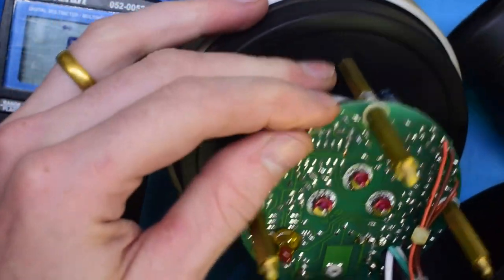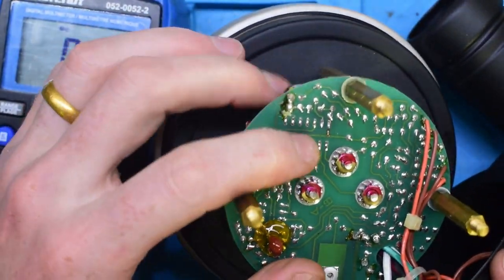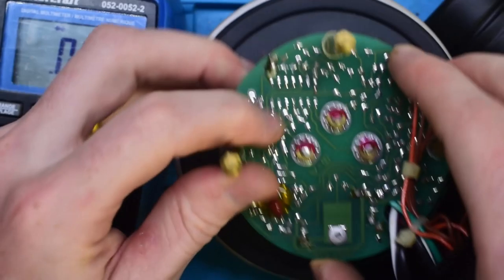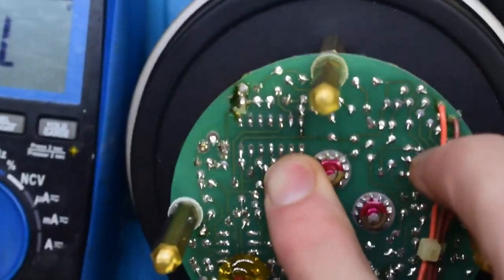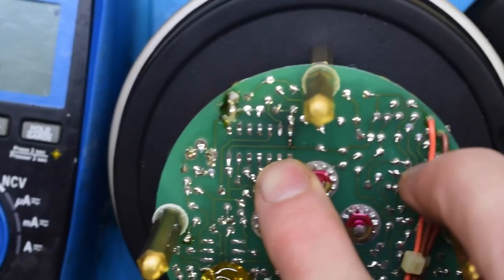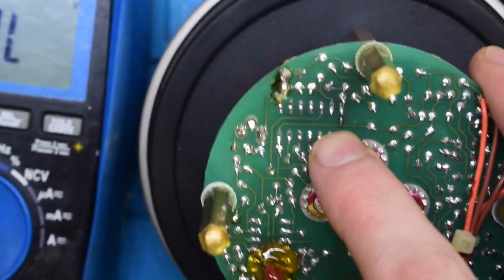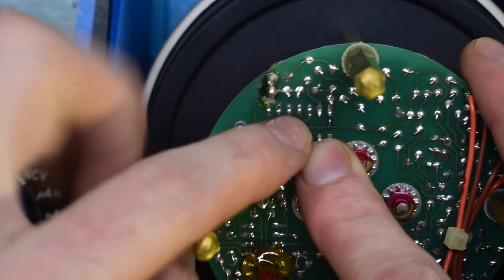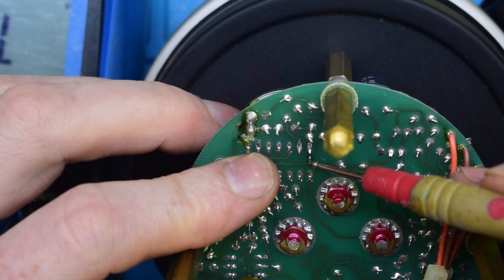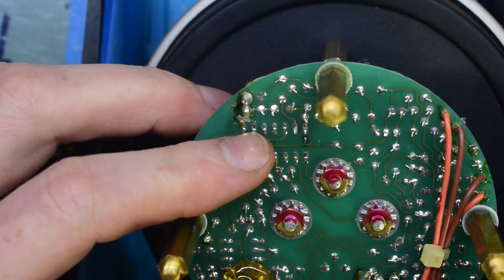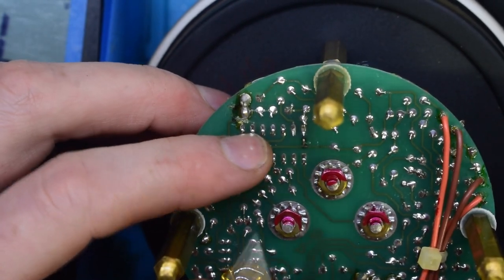Oh, here we go. I think we may have found the issue. I do see a burnt ground line right in here. You can see that little piece of silver right here, the trace has burnt off. So I think that's our problem.